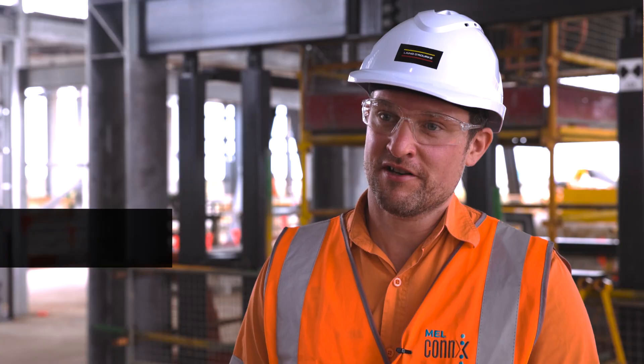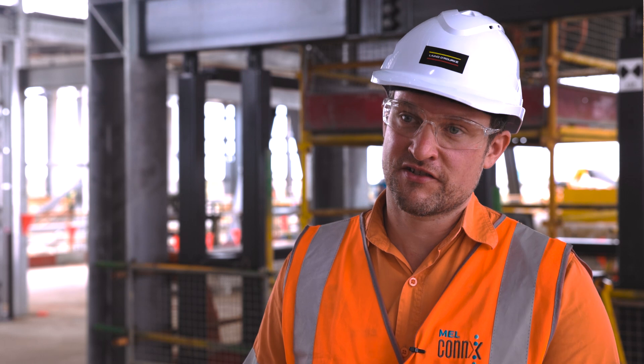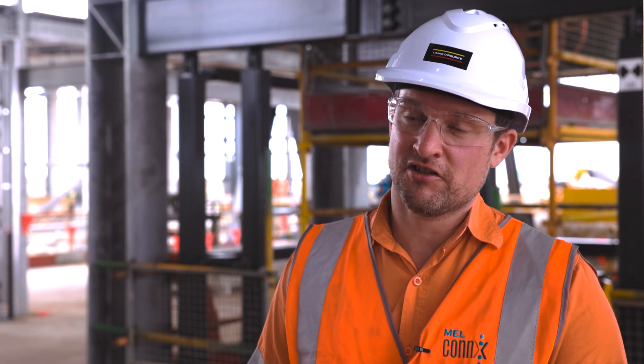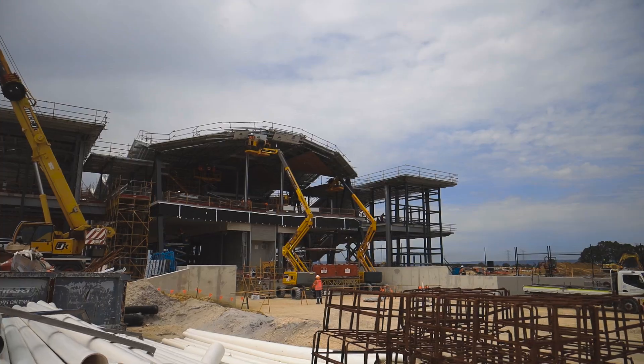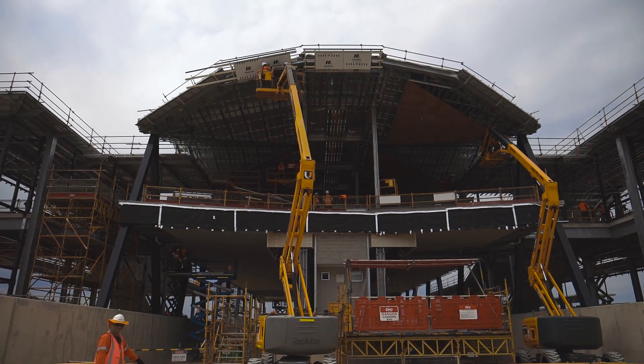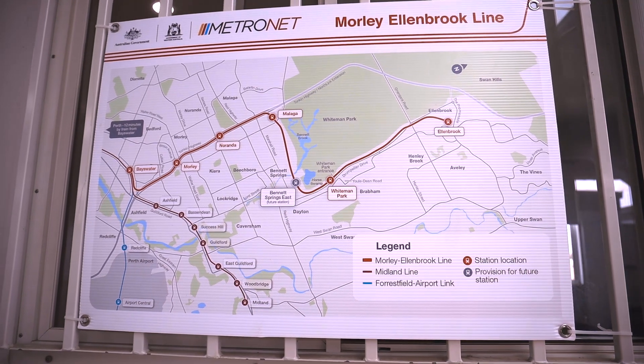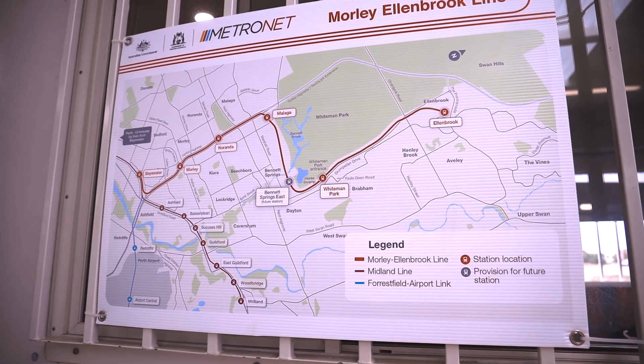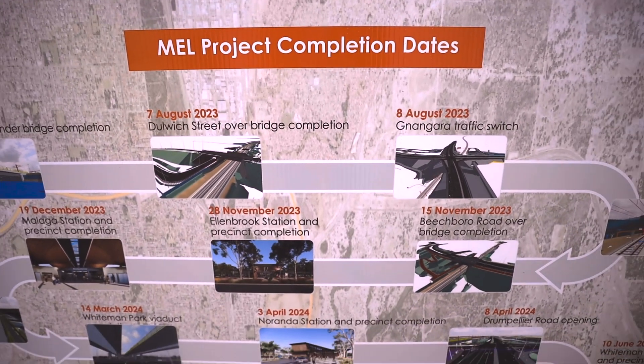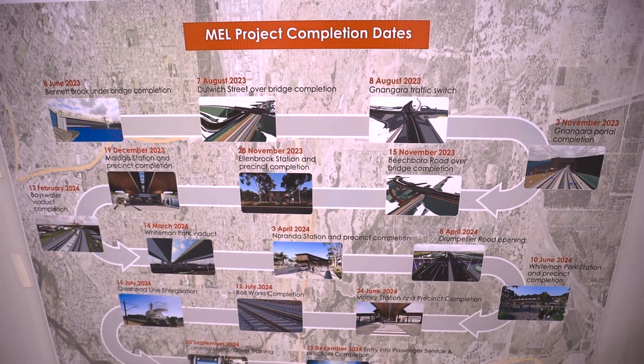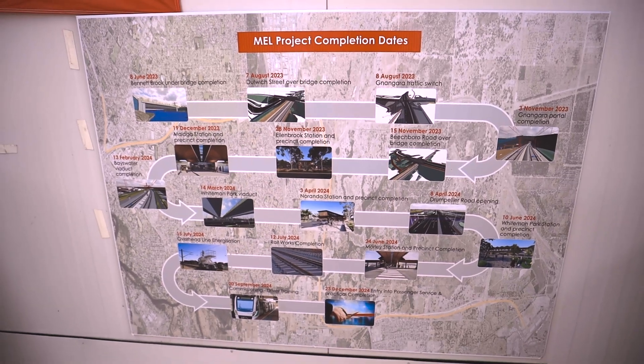The Moorlake-Allenbrook line is important because we're providing a corridor through to the northern suburbs, a connection to the city. It's also connecting a lot of critical areas that at this point don't have public transportation. The project is pretty complex in terms of interfacing with other alliances. It consists of 21 kilometres of new rail track with five new stations and two major viaducts being built at the same time.